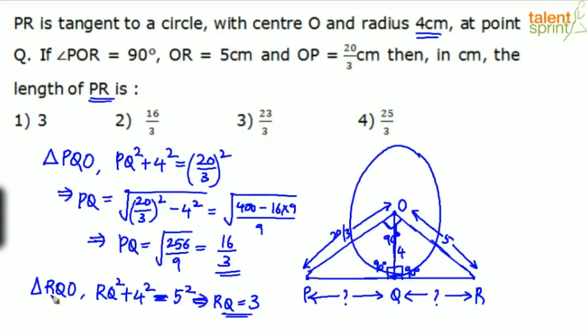We need complete length PR. Therefore, we can say PR, which is equal to PQ plus RQ. 16 by 3 plus 3. 16 plus 9 by 3. 16 plus 9 by 3 is 25 by 3. Option 4 will be the answer.